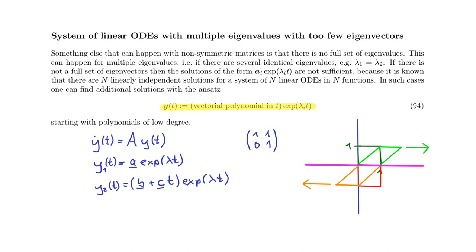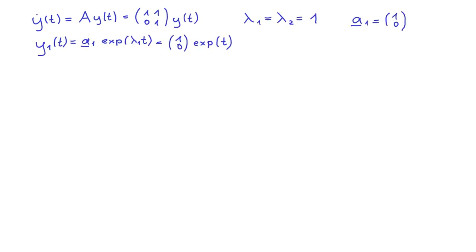Let us consider a concrete example. Here you see a homogeneous differential equation with a matrix that we have just discussed, which we know has the eigenvalues lambda 1 and lambda 2 equals to 1, and only one eigenvector A1 equals 1,0.